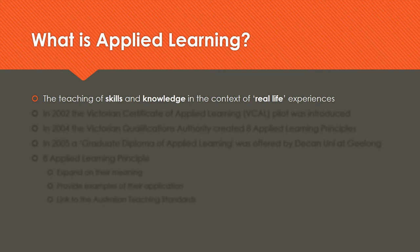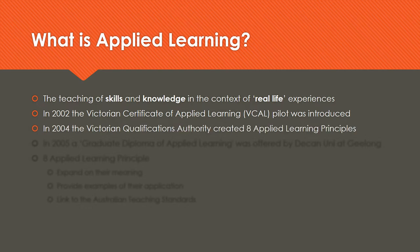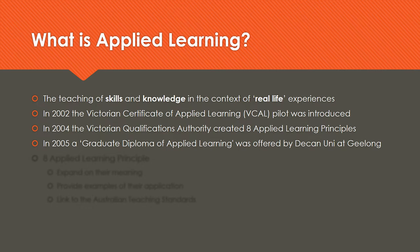For a number of reasons, including government policy and low youth employment rates, young people have been staying in school longer. A new approach was needed to address students who may have otherwise become disengaged with education or might be considered at risk. Blake in 2007 said this change in context has resulted in an applied learning pedagogy to cater for the increasing number of students completing Year 12. As a result, in 2002, the Victorian Certificate of Applied Learning, or VCAL, was introduced. In 2004, the Victorian Qualifications Authority created eight Applied Learning Principles. Then in 2005, a Graduate Diploma of Applied Learning was offered by Deakin University in Geelong, followed by a range of other universities offering similar qualifications throughout the country and internationally.